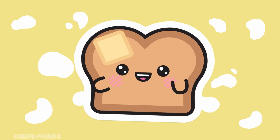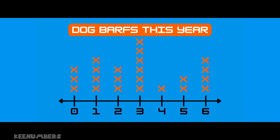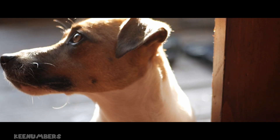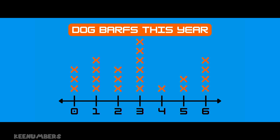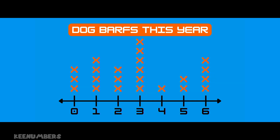Let's turn it up a notch. We're going to look at the number of dog barfs this year — yes, that's disgusting. We're working with the same line: zero, one, two, three, four, five, six. If I wanted to know how many dogs barfed twice this year, look at the two on this line. How many X marks are above the two? Three — one, two, three — three dogs barfed twice.